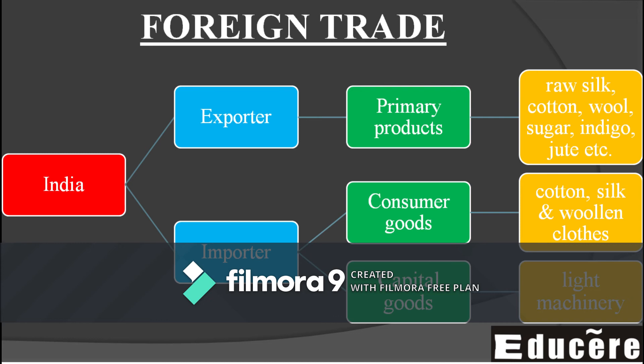Capital goods — such as machines and implements — were also imported, which helped with further production. So to summarize: India exported primary products from agriculture and animals, and imported finished goods directly consumed by consumers, as well as capital goods like machinery and tools for further production. These were the import and export patterns under British rule.